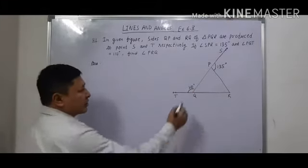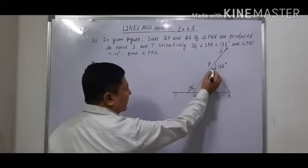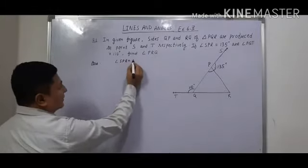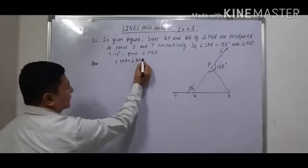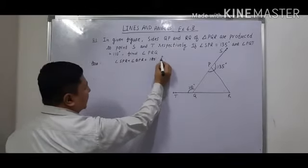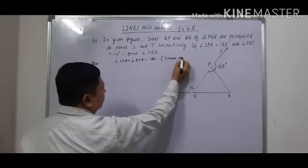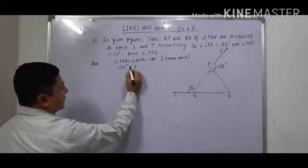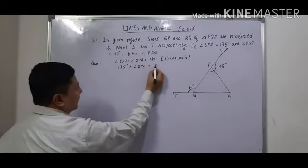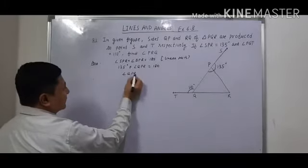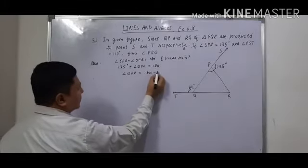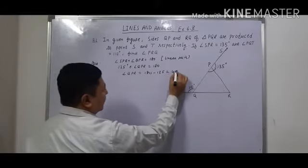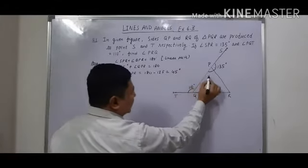First, these two angles are forming a linear pair. So angle SPR plus angle QPR is equal to 180 degrees, by the linear pair property. Angle SPR is 135 degrees, so angle QPR is equal to 180 minus 135, which is equal to 45 degrees.